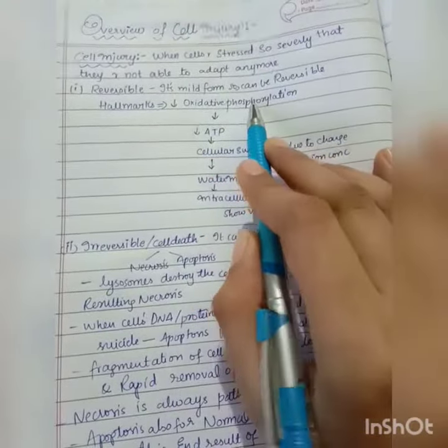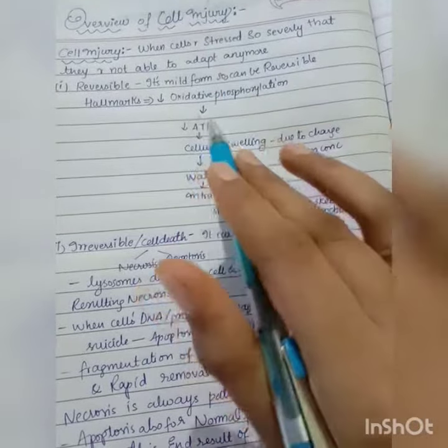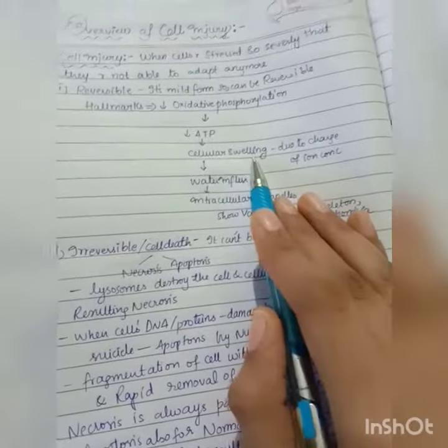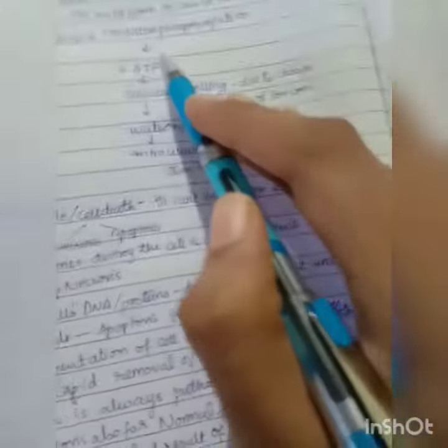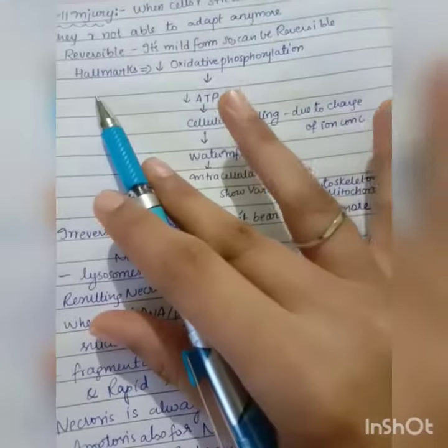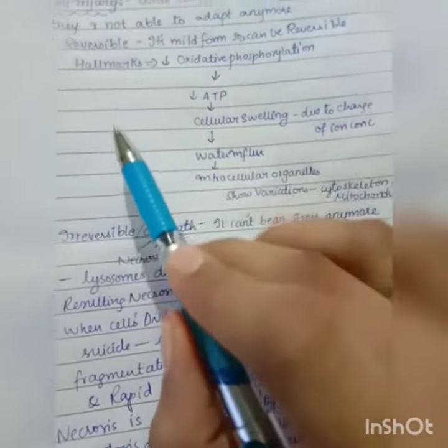When oxidative phosphorylation takes place, ATP decreases. When ATP is decreasing, cellular swelling takes place. Why? Because when ATP decreases, the sodium-potassium pump gets damaged. The function of sodium-potassium pump is to take sodium out of the cell in exchange of calcium and potassium.